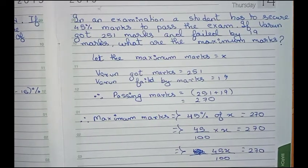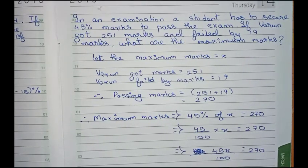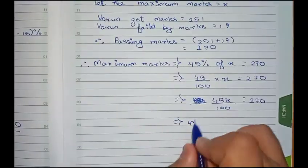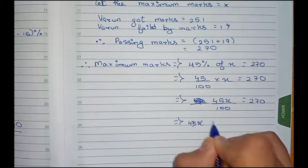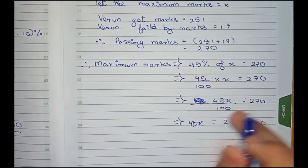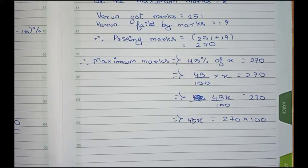Now I write 45x equals to 270 into 100. As we are taking 100 from left side to right side, it goes for multiplication.